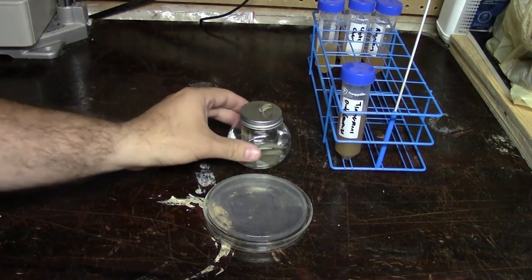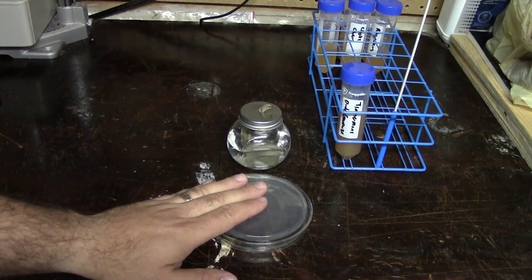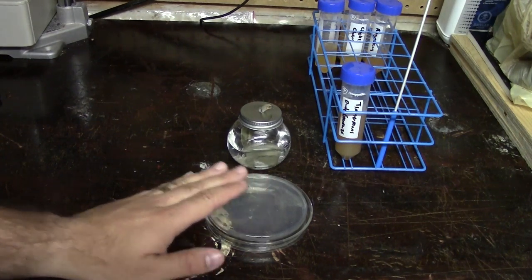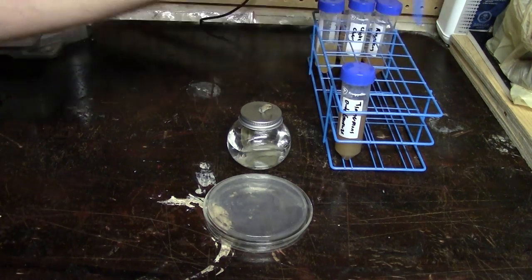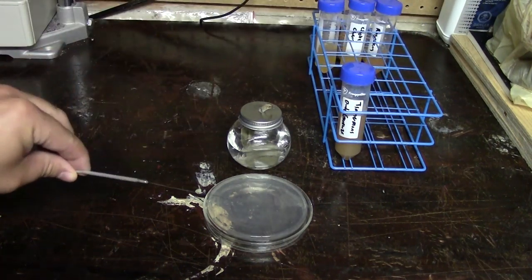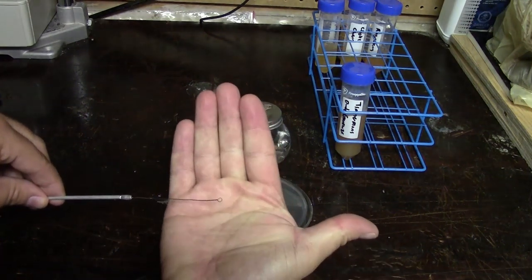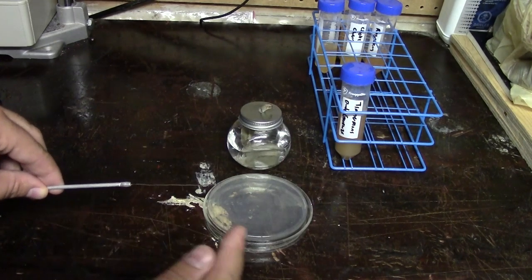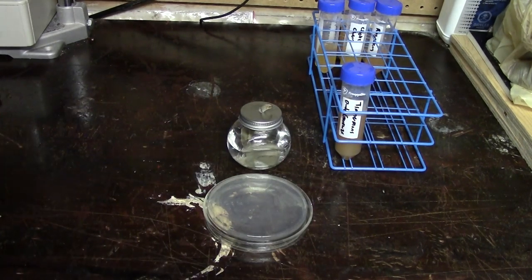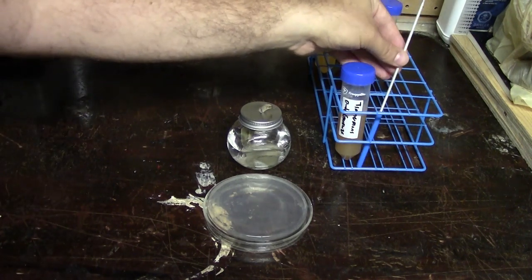You're going to need either a Bunsen burner or an alcohol lamp, of course your petri dish with whatever agar you're going to use and I'll talk about making these in a future video. And you're going to need a loop. This is kind of hard to see but basically there's a small ring here, perhaps you can see it now in metal followed by a little bit of an extension and this is used to sterilely transfer yeast and other organisms from point to point.